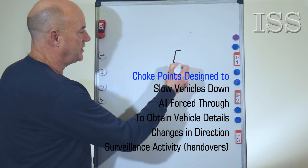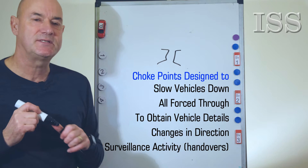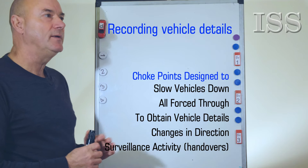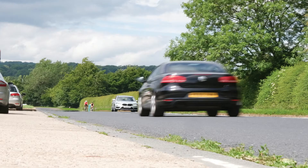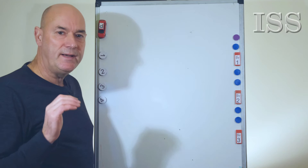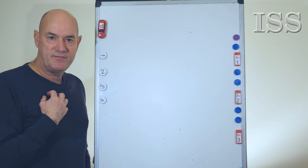A lot of people conjure up an image that a choke point is like a pinch point where everybody is forced through — that's not necessarily the case, although some bridges are ideal choke points. We have to use the route. It could be that you're parked in a lay-by just counting cars that go past you. The only problem with that is if cars are going too fast, you won't have time to get the make, model, colour, and registration all at once. So you've got to be in an area, or design the route, so that traffic slows down to our advantage.